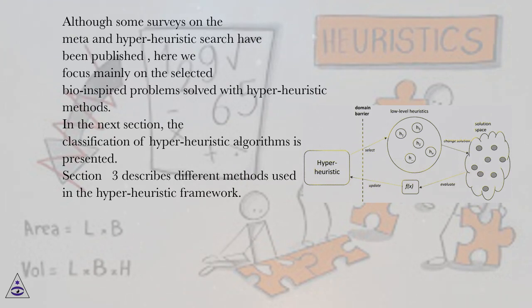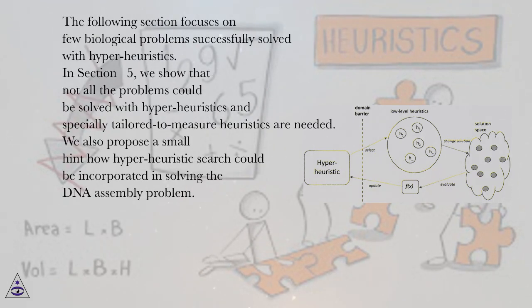Section 3 describes different methods used in the hyper-heuristic framework. The following section focuses on a few biological problems successfully solved with hyper-heuristics. In section 5, we show that not all problems could be solved with hyper-heuristics and specially tailored meta-heuristics are needed.